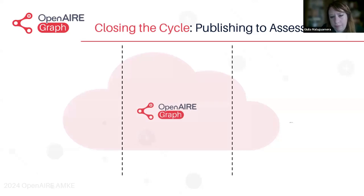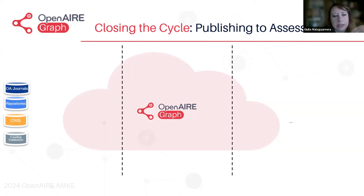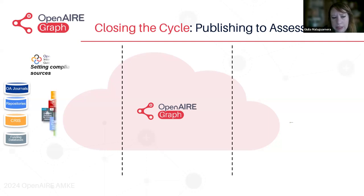From publishing to assessment, the librarians are key in this phase. Most of you are, directly or indirectly with colleagues, looking at open access journals, repositories, and you may also have a role in funding databases. You may speak with, for example, National Contact Points for Horizon, or with ministries, or have an association that supports you in the way you are negotiating. You are fundamental in bringing these resources.